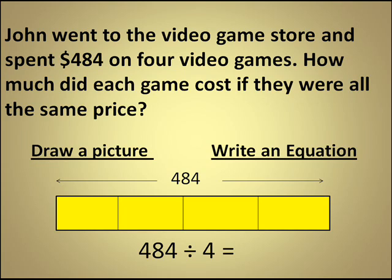Now that we have our drawing, we can take a look at our drawing and we can see that the whole of 484 needs to be split up into four equal pieces. So we know that 484 needs to be divided by four in order to find out how much each segment of our rectangle is worth.